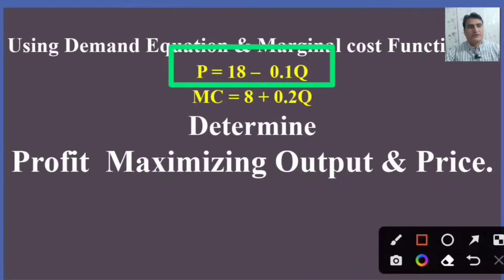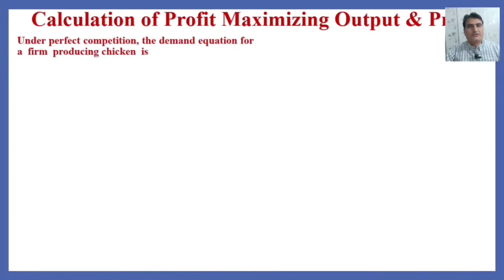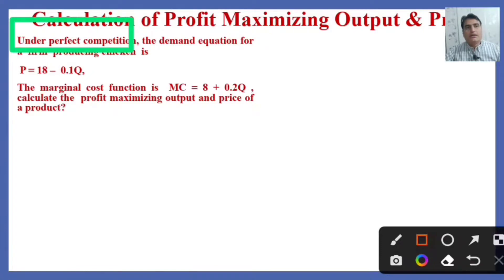So here we have to find the profit maximizing output and price using the demand and marginal cost function. This is the question: Under perfect competition, the demand equation for a firm producing chicken is P = 18 - 0.1Q, and the marginal cost function is MC = 8 + 0.2Q. Calculate the profit maximizing output and price of a product.